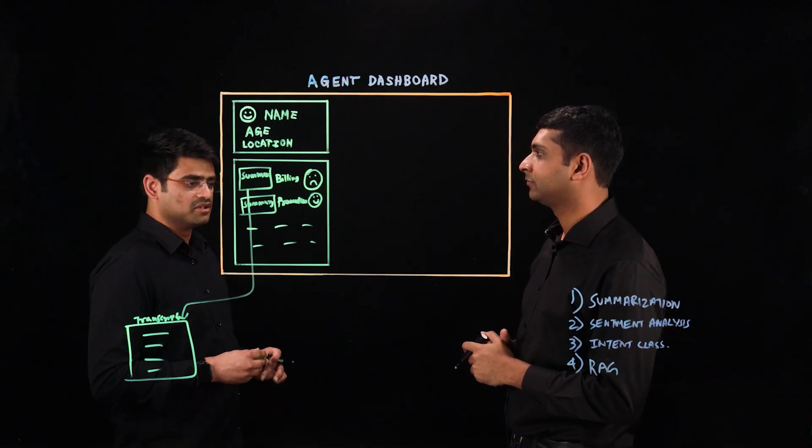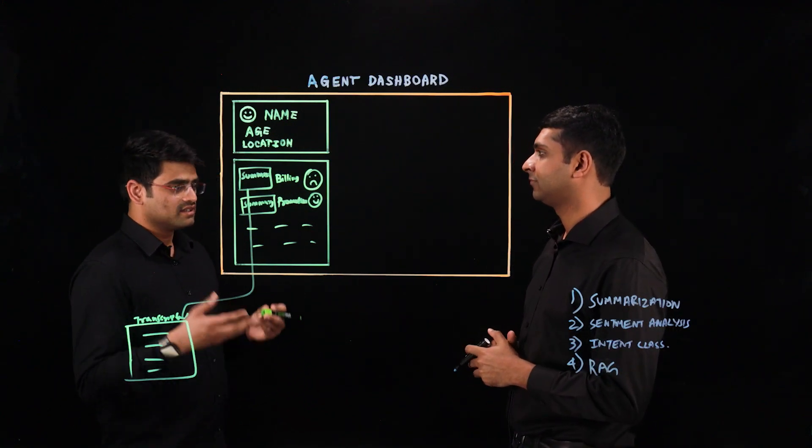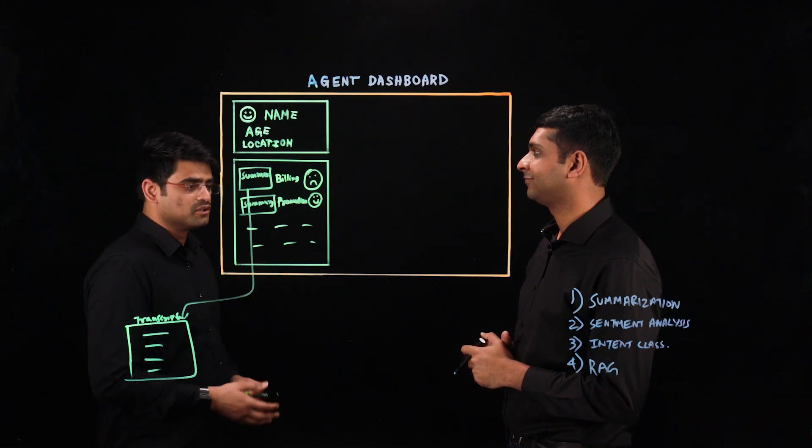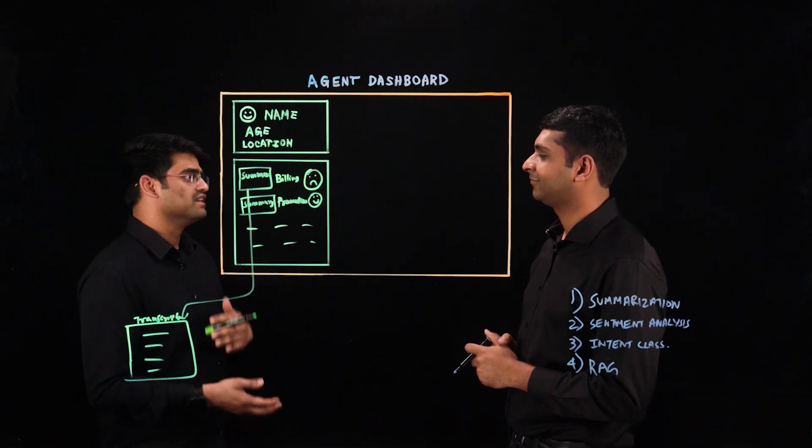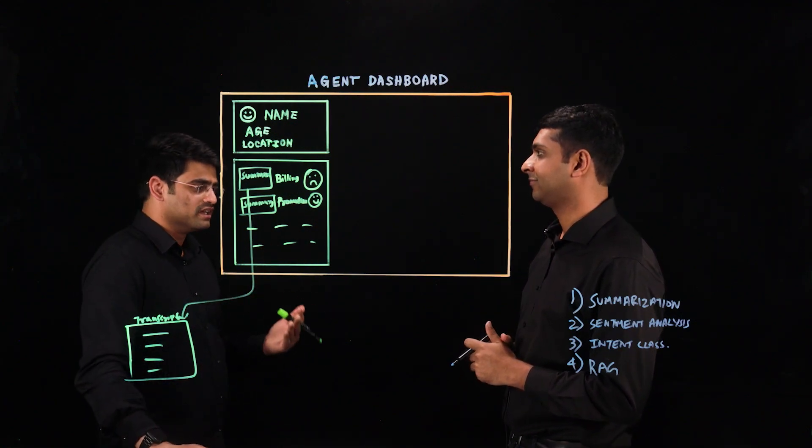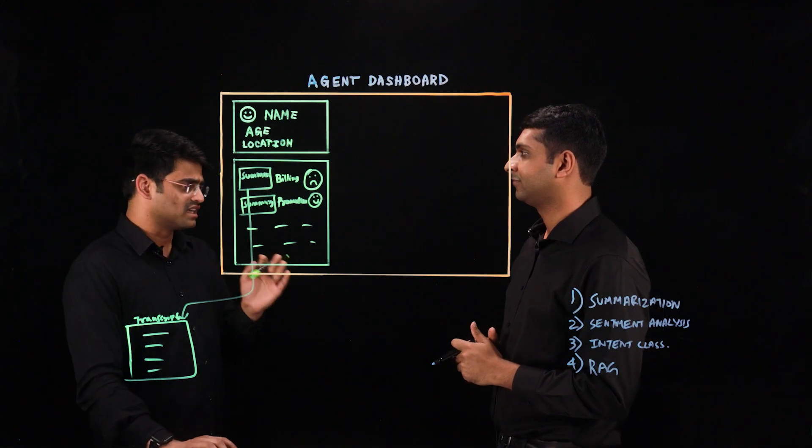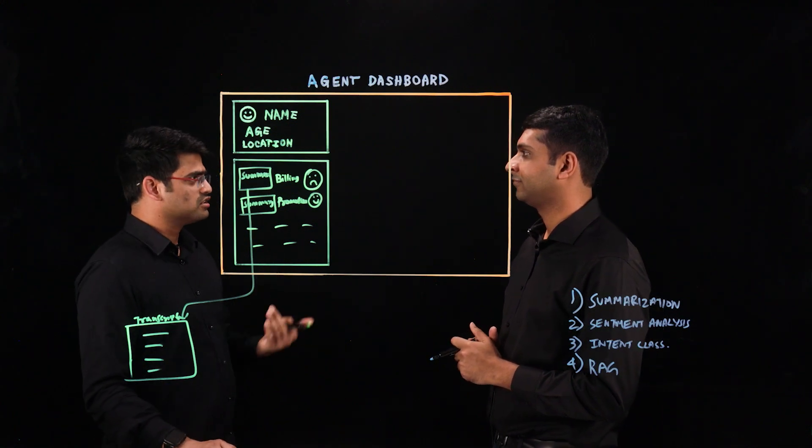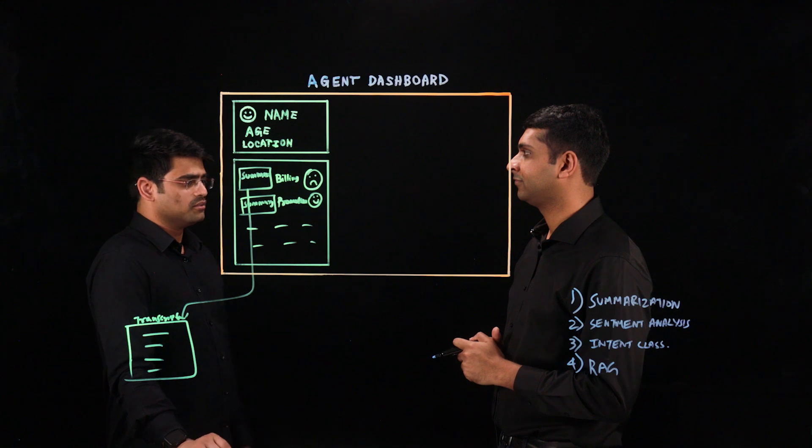That is interesting because every time I call the agent, I get transferred to a different agent and I have to end up saying all the things over and over again. But how does this RAG work? Can the agent just type in a question and get the responses back from the generative AI LLMs?